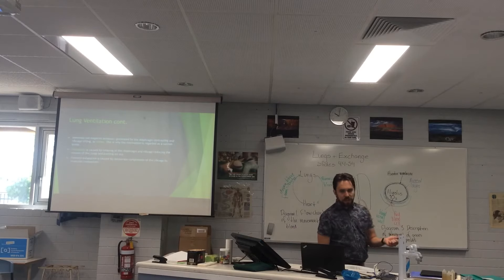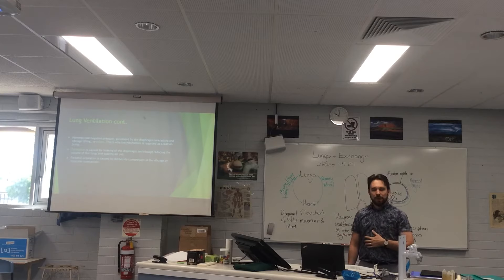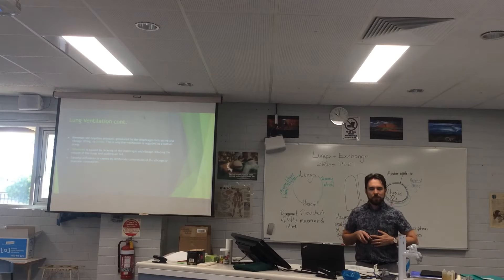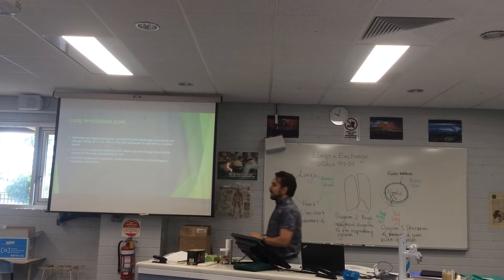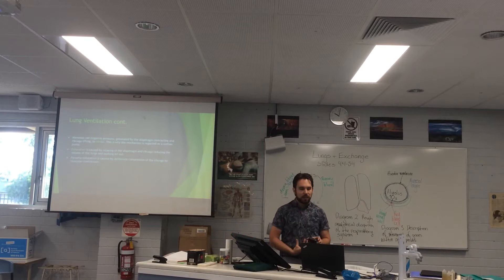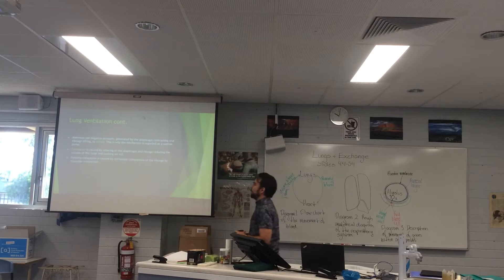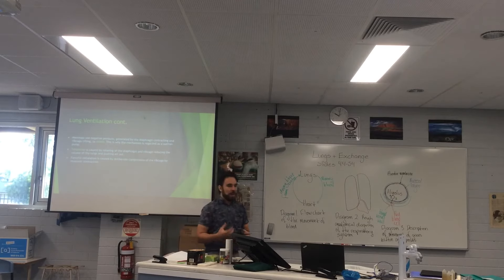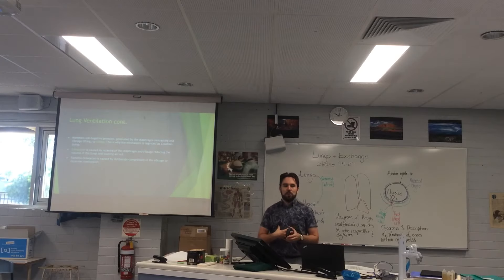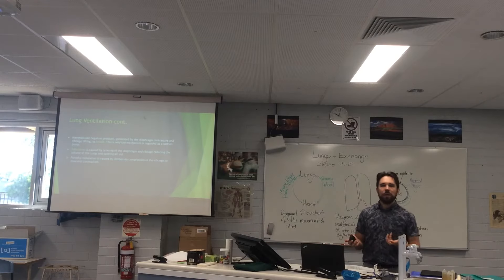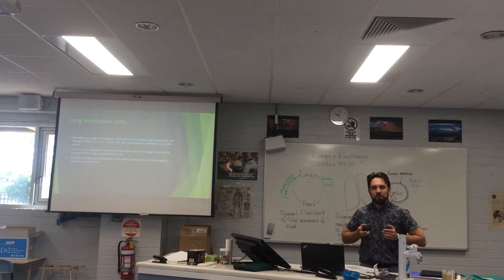Mammals use negative pressure generated by the diaphragm contracting and the ribcage lifting. The diaphragm contracts and gets smaller, becoming slightly bell-shaped, the ribcage lifts up, and we inhale — this is why the mechanism is regarded as a suction pump. Exhalation is caused by relaxing of the diaphragm and ribcage, reducing the volume of the lungs and pushing air out. Forceful exhalation can be caused by further compressing the ribcage — you can feel your body do this when you're trying to finish a very long sentence.